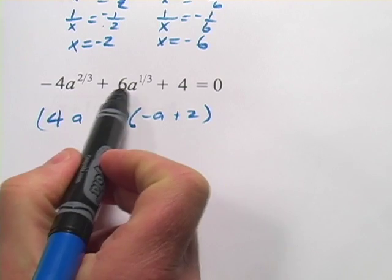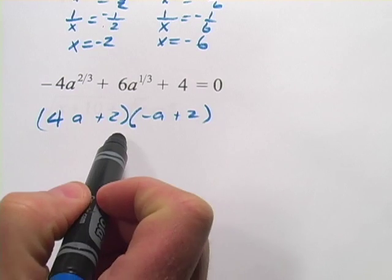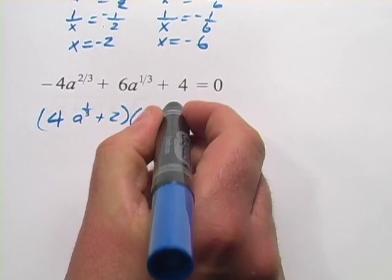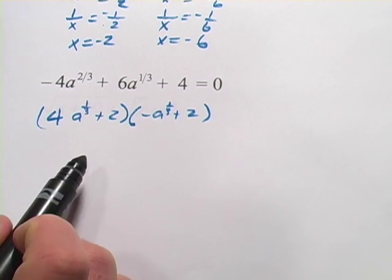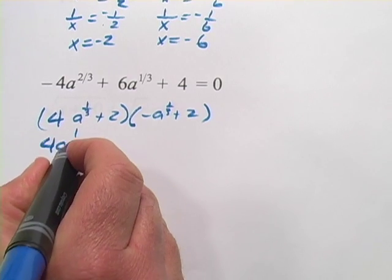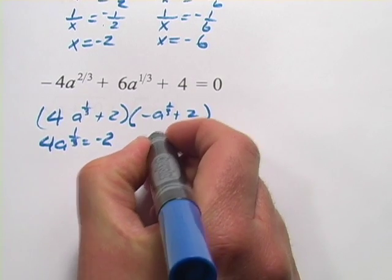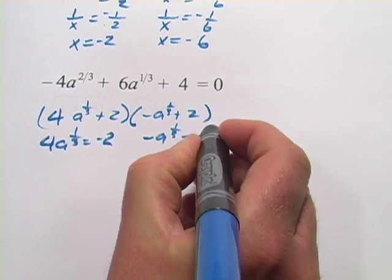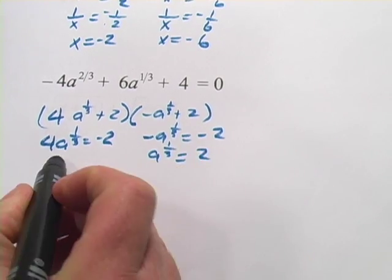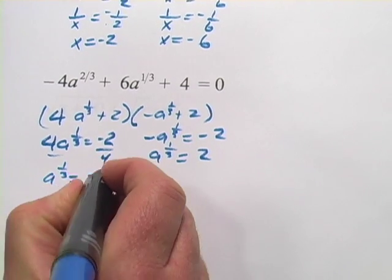Okay, that works. But since our powers here are 2 thirds, 1 third, and 0, we're going to have 1 third here and 1 third here. Now we'll go about solving these factors by setting them equal to 0. That would be 4a to the 1 third equals negative 2. And over here we would have negative a to the 1 third equals negative 2, which is a to the 1 third equals 2. And over here we would divide by 4. We would get a to the 1 third equals negative 1 half.